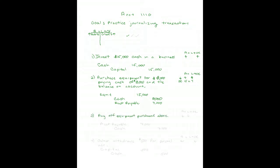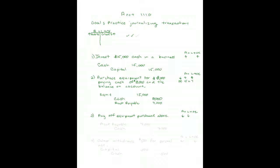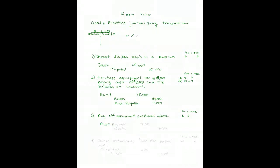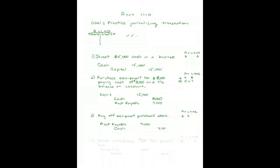The next journal entry pays off the equipment balance from above. In the balance sheet equation, assets go down and liabilities go down. Cash is an asset — to decrease assets, credit them. To decrease liabilities, debit them. So debit Accounts Payable for $7,000 and credit Cash for $7,000. The transaction now matches the balance sheet equation.